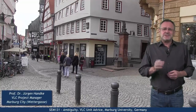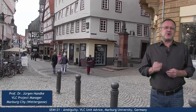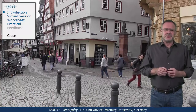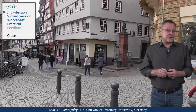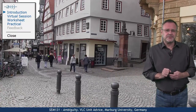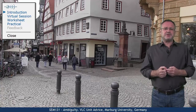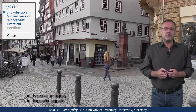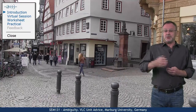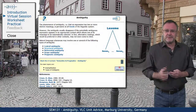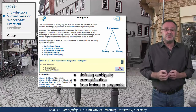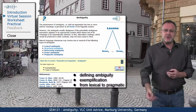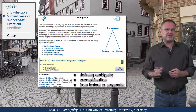Words, phrases, sentences or utterances can have several distinct meanings. This phenomenon is referred to as ambiguity. The discussion of the types of ambiguity and their linguistic triggers constitutes the goal of this unit. In the virtual session we will first define ambiguity and will then discuss and exemplify its different manifestations, ranging from lexical to pragmatic ambiguity.